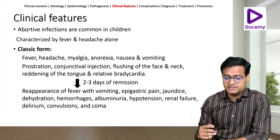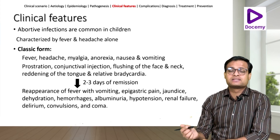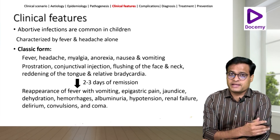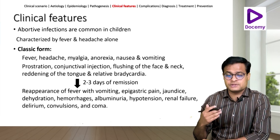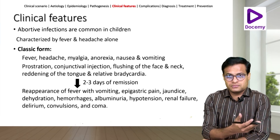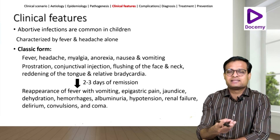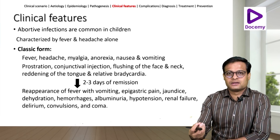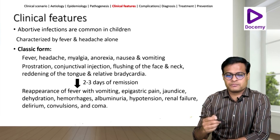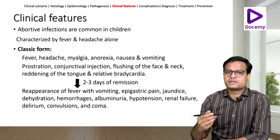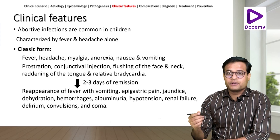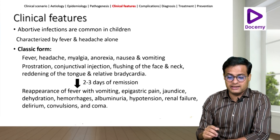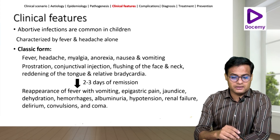There may be 2 to 3 days of remission and then reappearance of all these symptoms in a very severe form: recurrence of fever, vomiting, epigastric pain, and jaundice due to liver failure. Dehydration can lead to pre-renal failure and tubular necrosis. Hemorrhages may occur due to DIC, reduced vitamin K-dependent clotting factors, and pro-hemorrhagic features from endothelial and platelet damage by the virus. Because of renal damage, there can be albuminuria. The patient can have hypotension, renal failure, delirium, convulsions, and coma.